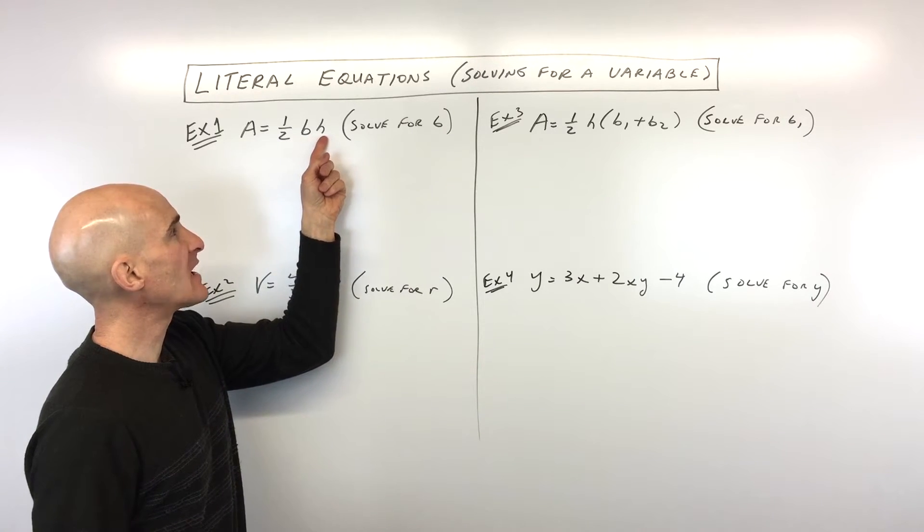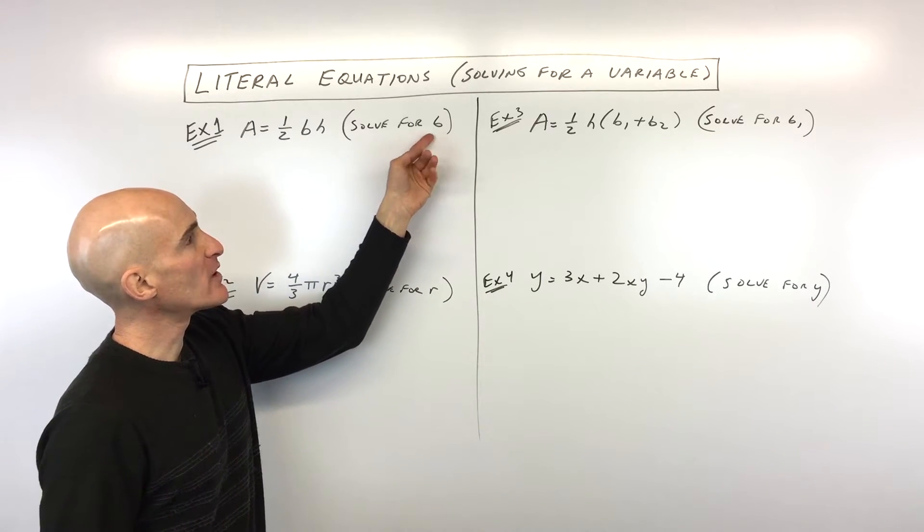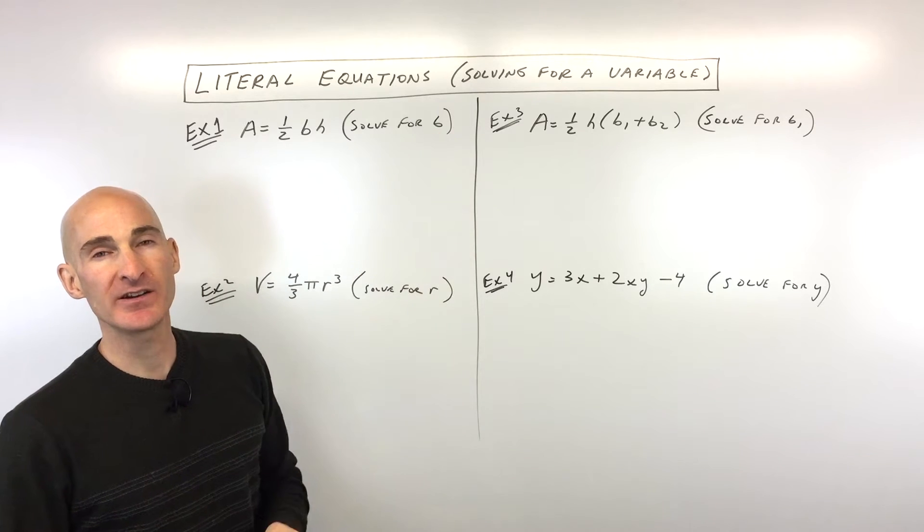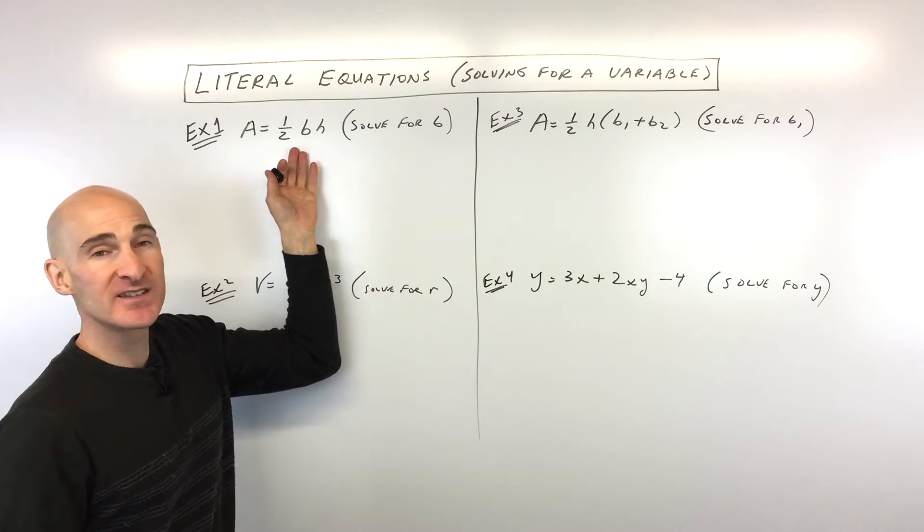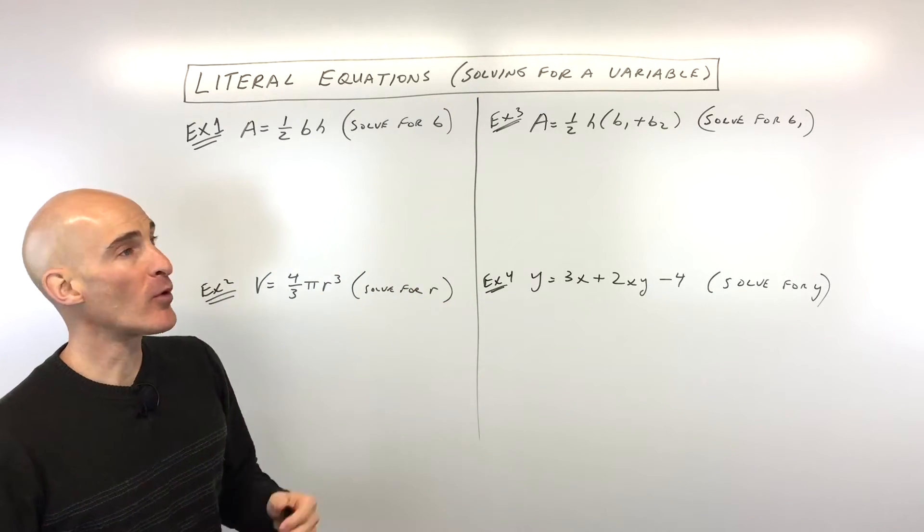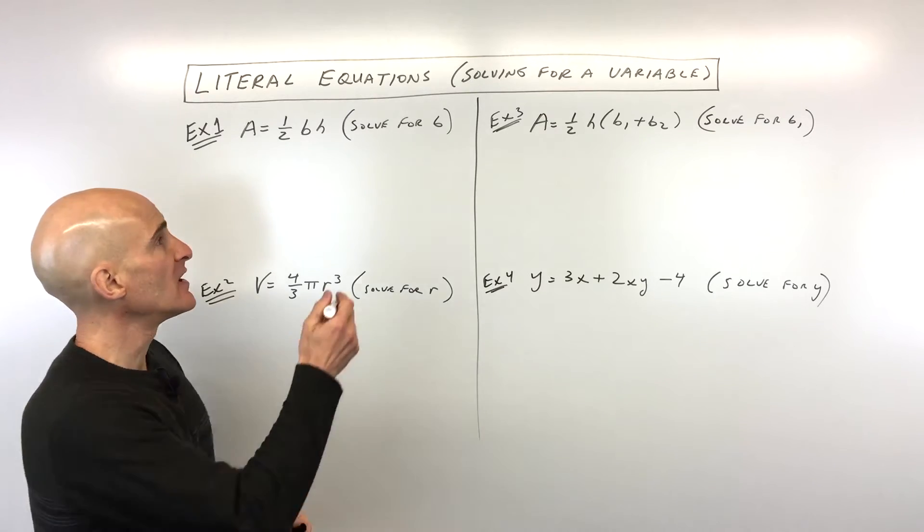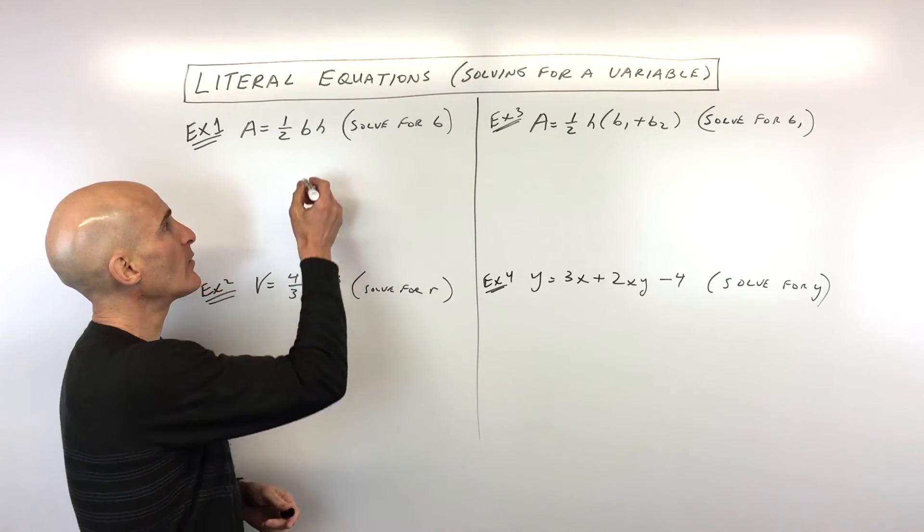Well, see how it says A equals one-half B times H? Here, what we want to do is we want to solve for B. That's what they're asking of us. Now, you recognize this formula as the formula for the area of a triangle, but what we're doing is we're just rearranging it to get B by itself. So how do we get B by itself?